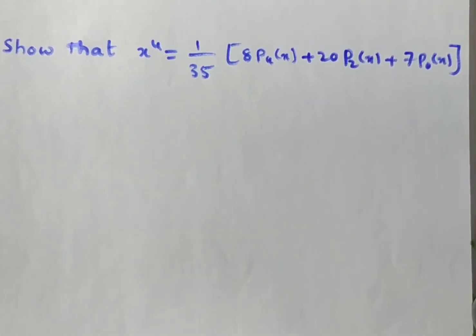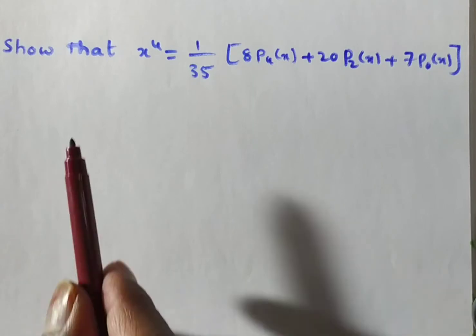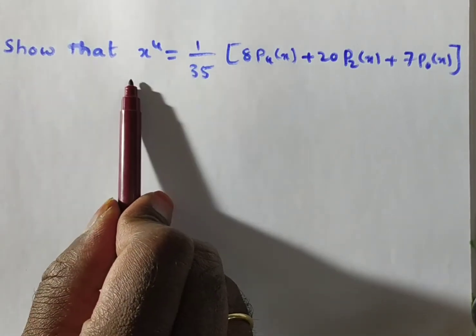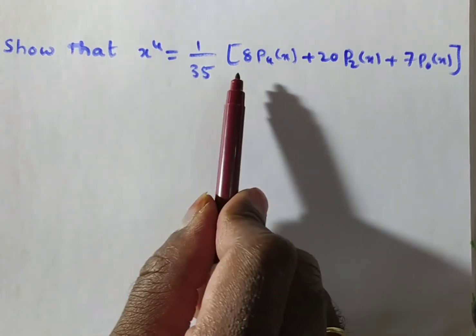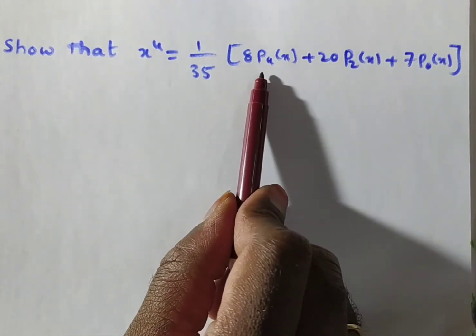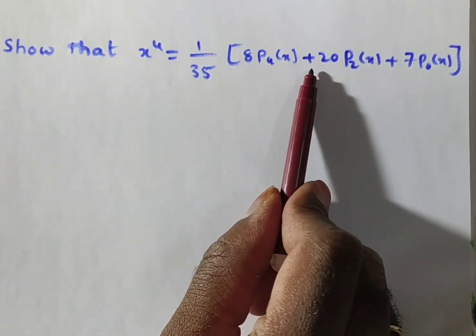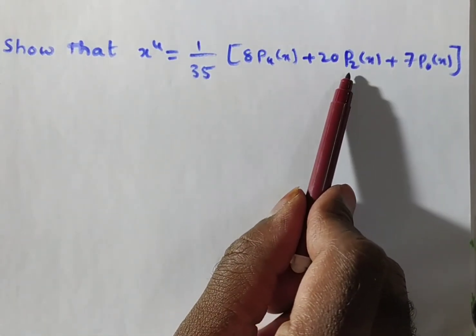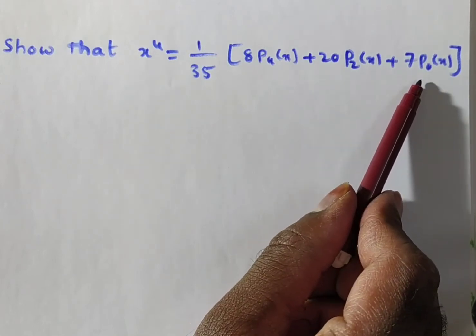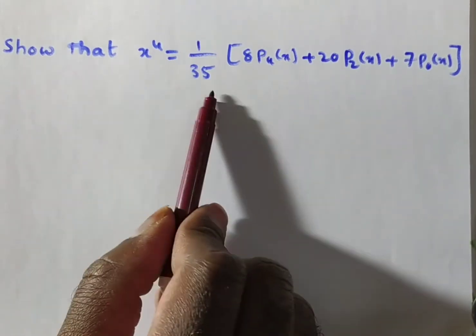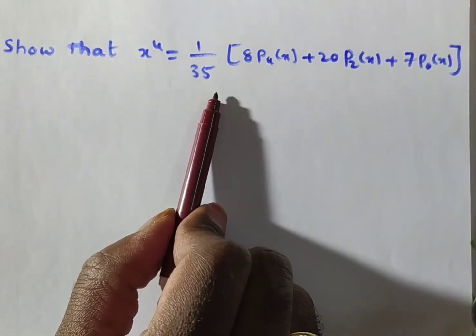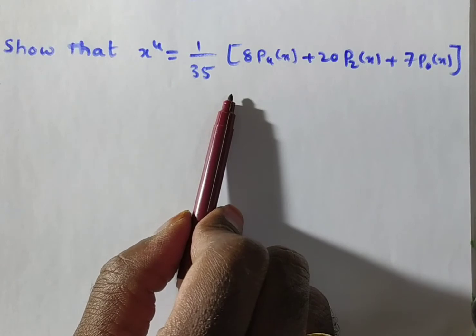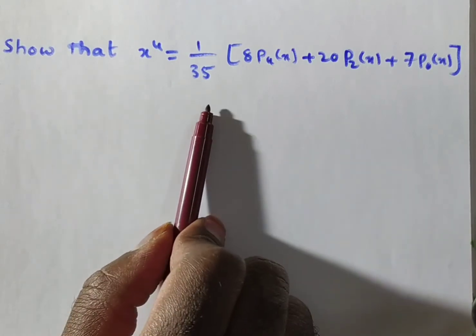Hi friends, in this video we are discussing an application of the Legendre polynomials. We are showing that x to the power of 4 is equal to 1/35 times of 8·P₄(x) plus 20·P₂(x) plus 7·P₀(x). We are proving this in this video. This topic is chosen from Legendre polynomials in special functions.